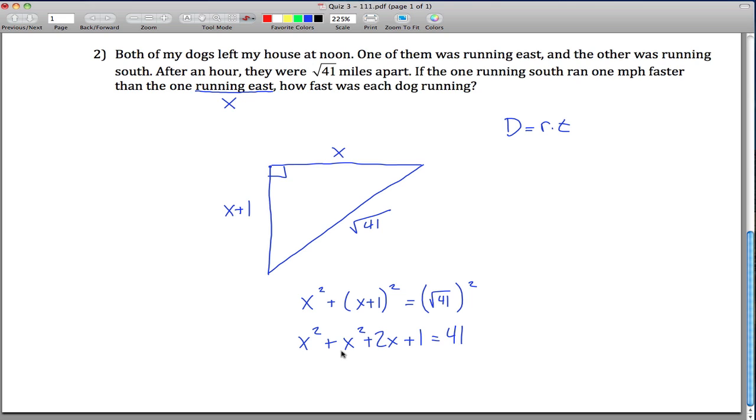Now we can combine terms. x squared plus x squared is 2x squared. We got 2x, and if we subtract 41 from both sides, we get minus 40 equals 0. Running out of room, so we'll move this up here. We want to solve this thing. One little trick that'll make this easier to factor is divide both sides of the equation by 2. You don't have to do this, but it'll make it easier to see what the answer is.